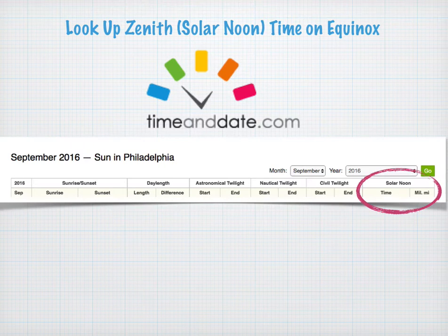Or you can go to timeanddate.com and look it up there. Their layout is a little bit different. They use a full month's calendar, and there's a column on the right-hand side called solar noon, and you could find the time there. Just make sure you pick the date of the equinox.